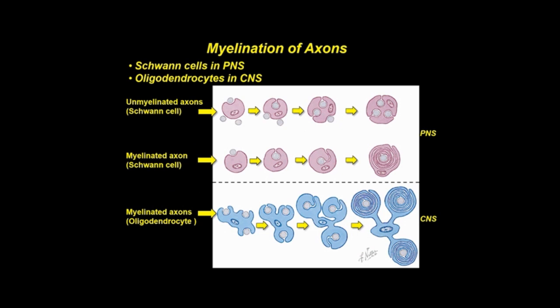Myelin is an electrical insulator that increases conduction velocity of nerve fibers. In the PNS, it is formed by neural crest-derived Schwann cells; in the CNS, oligodendrocytes form myelin. Myelination begins in the third trimester and ends during early childhood. Schwann cells in the PNS are either myelinating or non-myelinating. Myelinating Schwann cells are associated with a single axon, while non-myelinating Schwann cells collectively ensheath groups of small axons. In the CNS, oligodendrocytes can myelinate numerous axons.